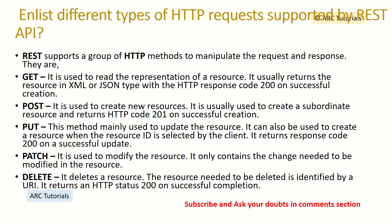What are the different types of HTTP requests supported by REST APIs? The different HTTP methods supported are GET, POST, PUT, PATCH, and DELETE. GET returns data from the server, typically with a 200 status. POST is used to create new resources, sending data from client to server. PUT is used to update an existing resource. PATCH is used to partially modify a resource. DELETE is used to delete a resource.